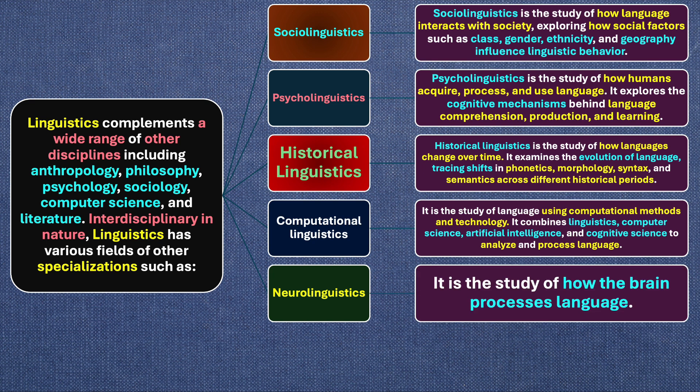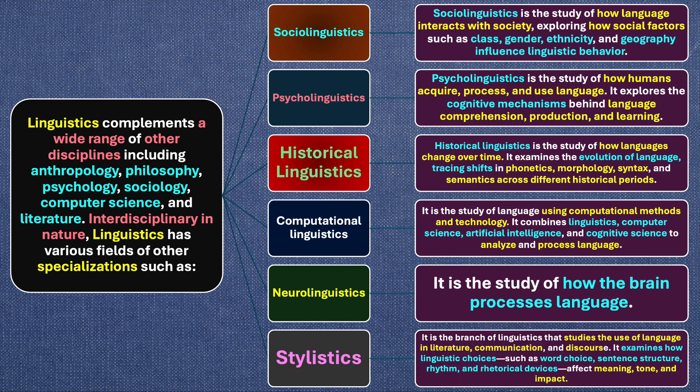Then we have neurolinguistics — it is the study of how the brain processes language. And the last one is stylistics — it is the branch of linguistics that studies the use of language in literature, communication, and discourse. It examines how linguistic choices such as word choice, sentence structure, rhythm, and rhetorical devices affect meaning, tone, and impact.